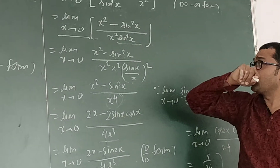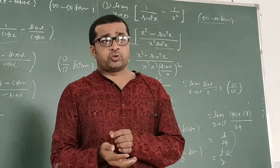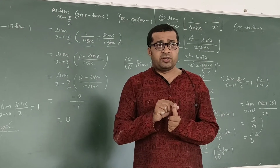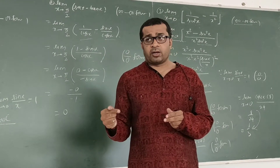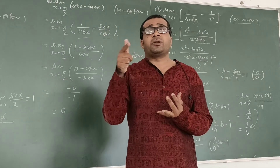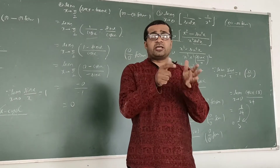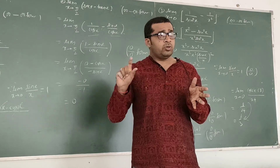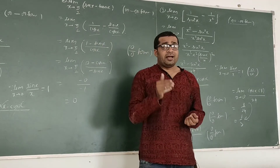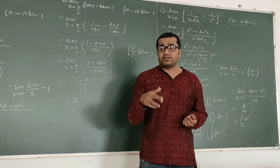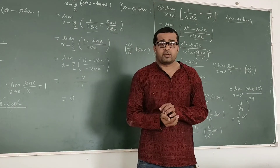So this is the way of solving the infinity minus infinity form. Two things to remember: whenever we get the infinity minus infinity form, we must cross multiply to convert it to 0/0 form or infinity/infinity form. Then we apply L'Hôpital's rule — differentiate numerator and denominator separately with respect to x. Whenever trigonometric terms like cot or tan appear, simplify them: tan = sin/cos, cot = cos/sin, sec = 1/cos.